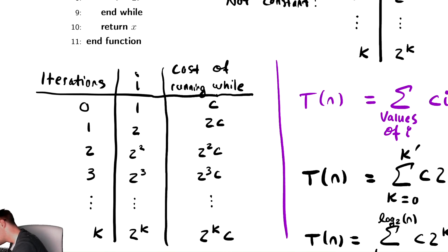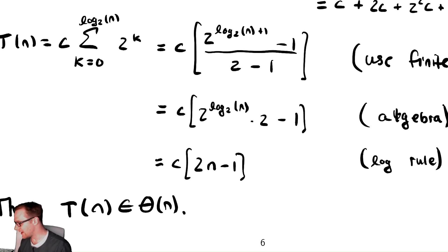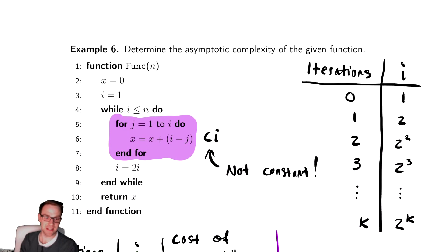If we go back up to the code, the final value i takes, or the biggest value, is n. That's the biggest I could ever get. So when i is equal to n, this code takes c n time, but the complexity is theta of n, which means that final run which takes c n time is effectively the only important thing.